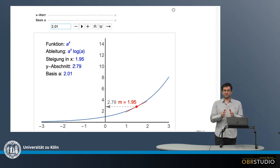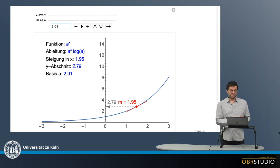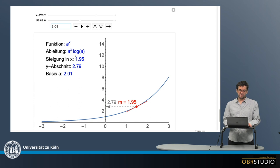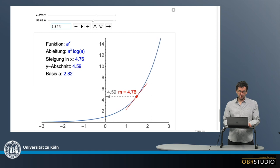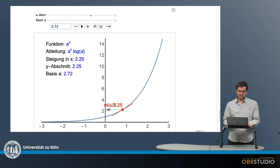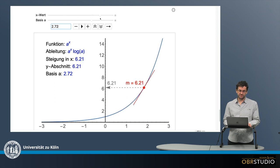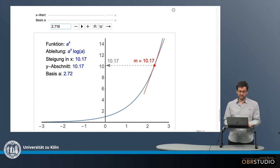One may wonder whether there is a certain value for the basis a at which the derivative and the function — so the slope and the y value — are equal. I change the a value a little bit until these two values get closer. Moving this around, at some point it looks quite good. And in fact, the derivative and the y value are the same no matter what x I have. There might be slight deviations, but adjusting the basis to maybe 2.718 makes it fit.